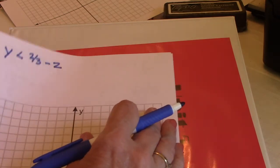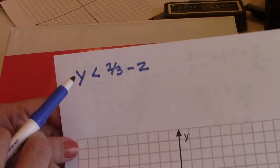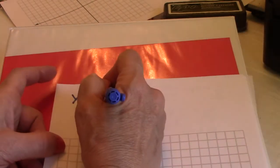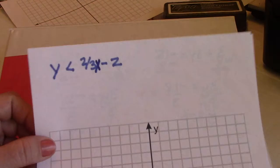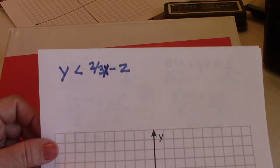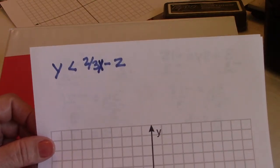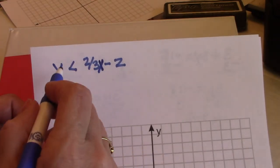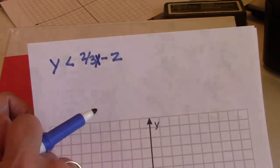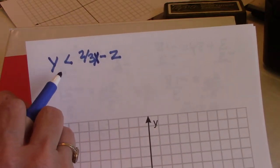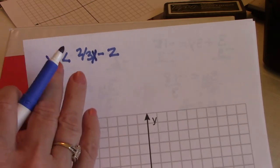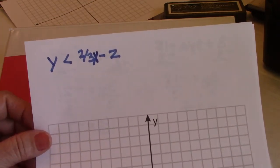Alright, here's our first problem today. Y is greater than two thirds x minus 2. Now if you remember the slope-intercept form y equals mx plus b, that's pretty much slope-intercept form there, only we've got an inequality instead. Solve this just like it was an equal sign, then we'll deal with our inequality sign.